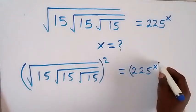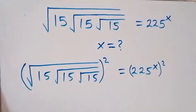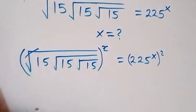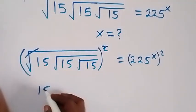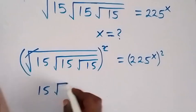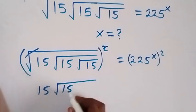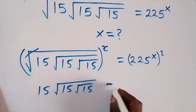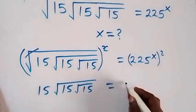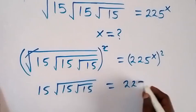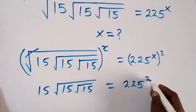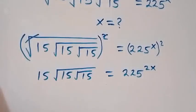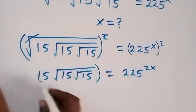We take the square on this side as well. This square cancels the first square root, then we have 15, then square root of 15, then root 15. This power multiplies and we have 225 raised to power 2x.